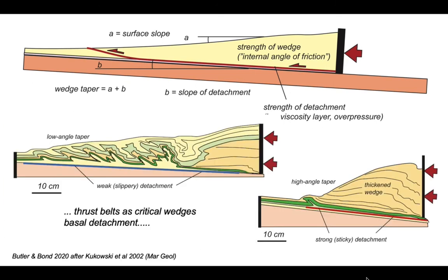Nowadays thrust belts are often conceptualised as critical wedges — that is, the shape is in a dynamic equilibrium between the strength of the basal detachment and the internal strength of the thrust belt itself. Various analogue models have been developed to show how variations in strength in the various materials and basal detachment can control the shape of a thrust belt. But these rely on the assumption that thrust belts uniquely form with a basal detachment — in other words, that they're thin-skinned.